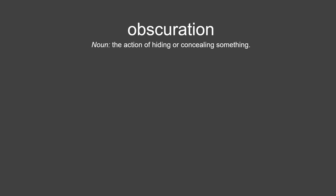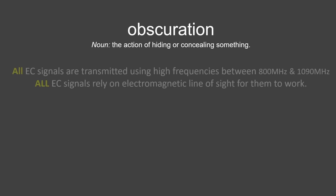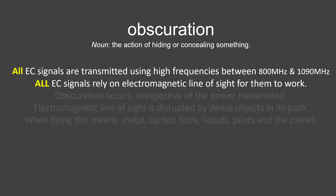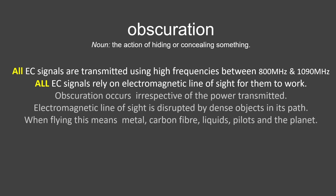The first major consideration is obscuration. No matter which device you install, all electronic conspicuity signals operate in the high-frequency bands, which require electromagnetic line of sight to work properly. If something gets in the way, the signal will be attenuated or weakened at best, and blocked or obscured at worst. The first thing that will obscure signals is any dense material such as metals and carbon fibre. In addition, fluids will attenuate the signals — such as fuel, and pilots and passengers who are made up of 70% water.